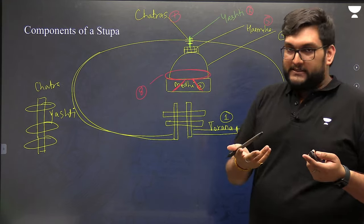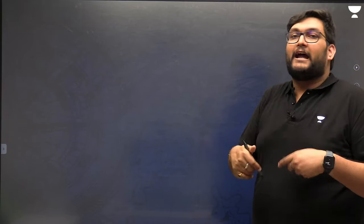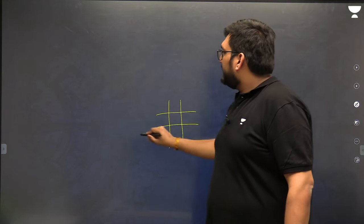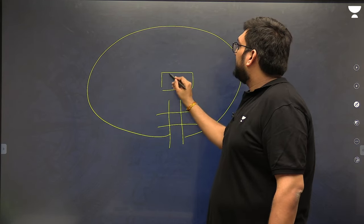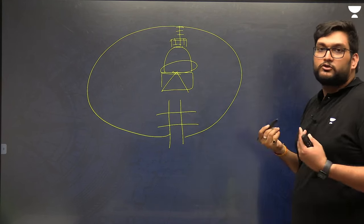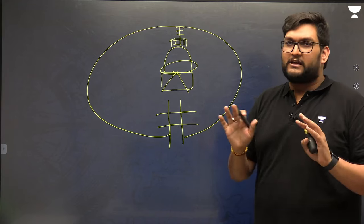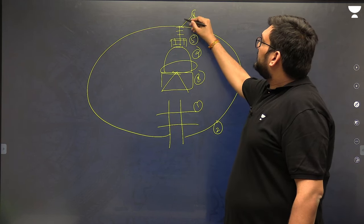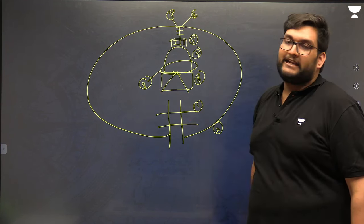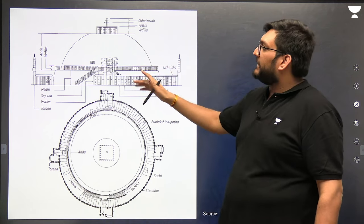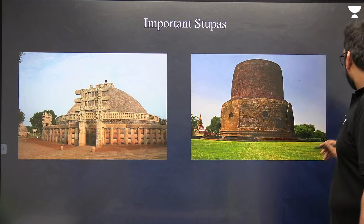In the examination, you need to draw this quickly — within 30 to 40 seconds. You don't have to be Michelangelo or Da Vinci. Simply make a hashtag shape, connect it, draw a rectangle for the Medhi, add an Anda, put a box for the Harmika, and add something like an antenna for the Yashti and Chhatras. Label the components: Torana, Suchi, Medhi, Anda, Harmika, Yashti, Chhatras, and Pradakshina Path. This gives you a better visual representation and will fetch you more marks.